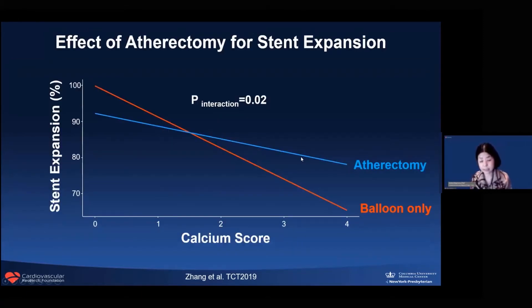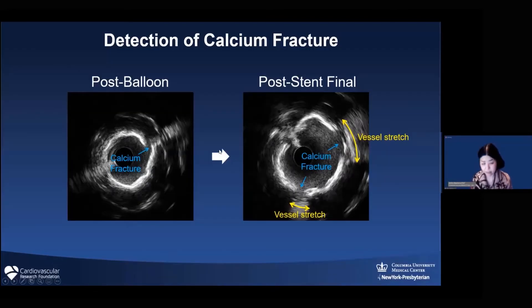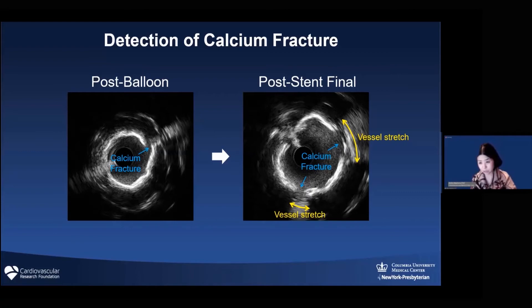There is a clear interaction between calcium score and atherectomy use. If the score is more than 2, you'll most likely achieve better stent expansion by doing something additional. For confirmation of adequate lesion preparation, look for calcium fracture. This is how calcium fracture looks on IVUS: look for signal behind the calcium. Normally, you can't see behind calcium. But if there is a fracture, the calcium has separated and you can see behind it—that's your fracture sign. With a fracture, the fracture site creates a good stent scaffold base and ensures good stent expansion. Confirming fracture before stenting in severe calcium is very important—it secures good stent expansion.